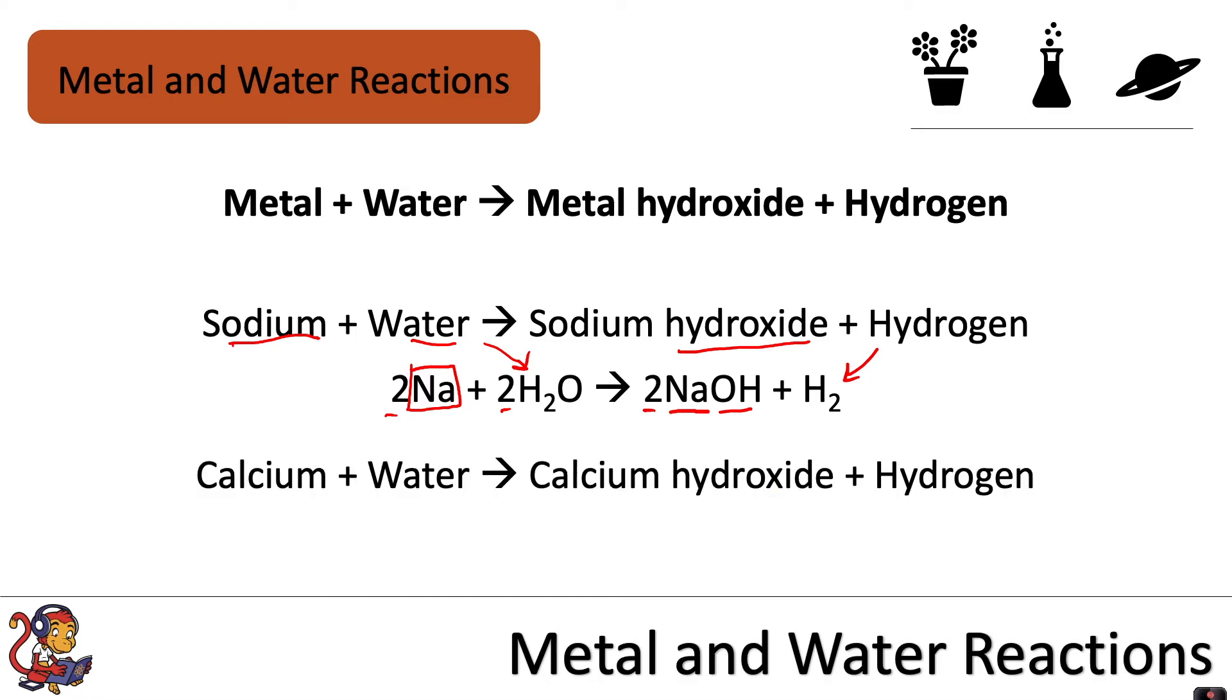In a second example, if we reacted calcium with water we would make calcium hydroxide plus hydrogen and the symbol equation would be Ca + 2H2O would make Ca(OH)2 + H2.